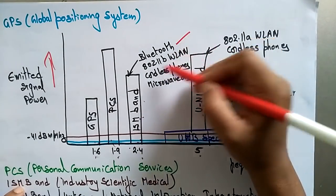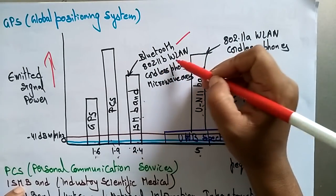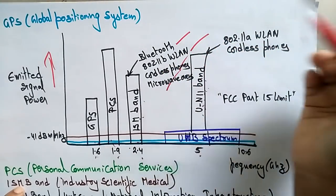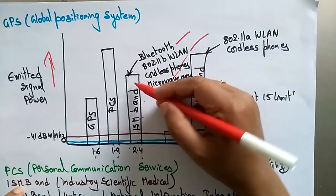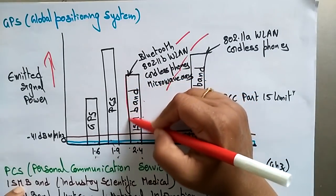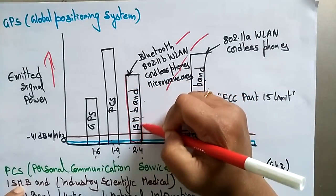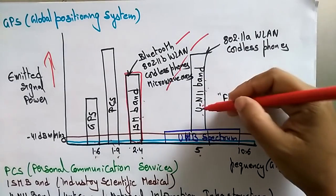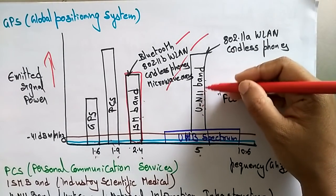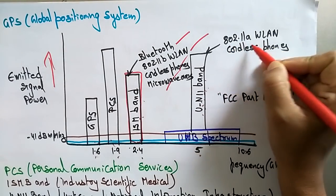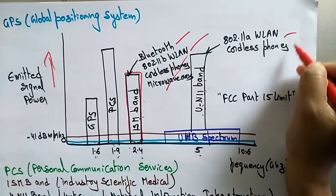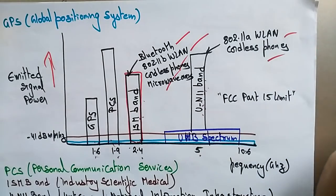For the ISM band at 2.4 GHz, technologies used include Bluetooth, 802.11b wireless LANs, cordless phones, and microwave ovens — all requiring that 2.4 GHz frequency. Whereas the UNII band uses 802.11a wireless LANs and cordless phones.